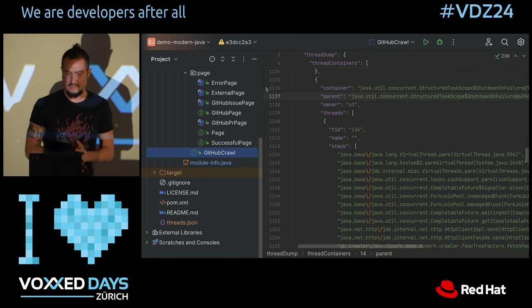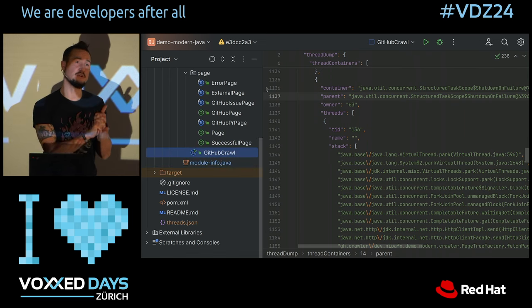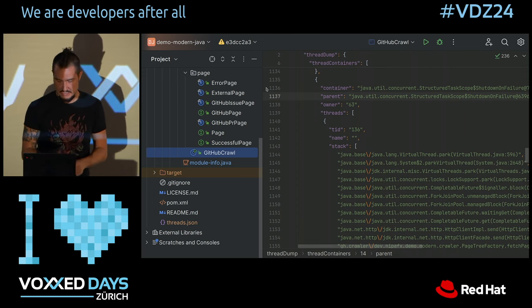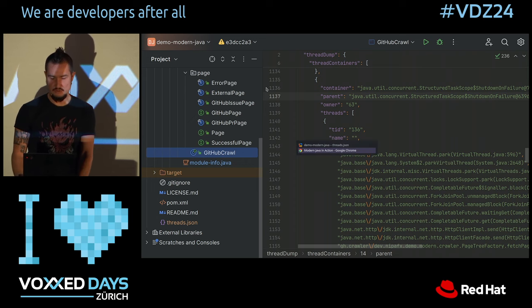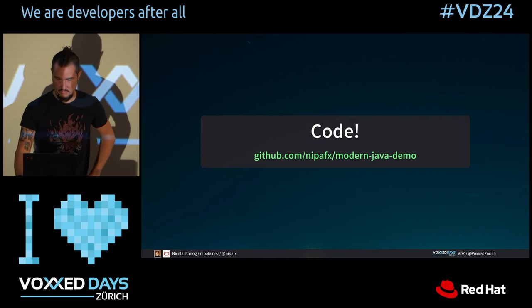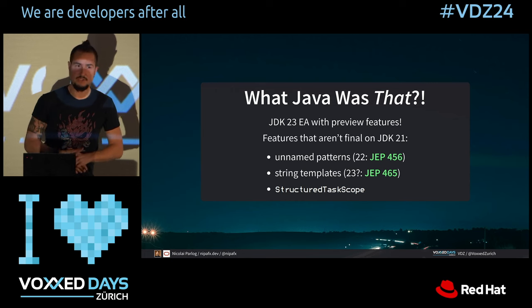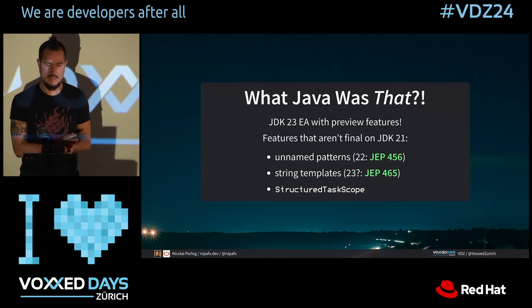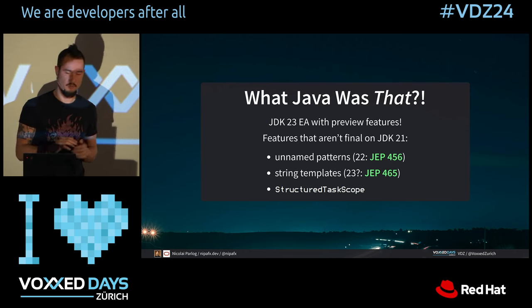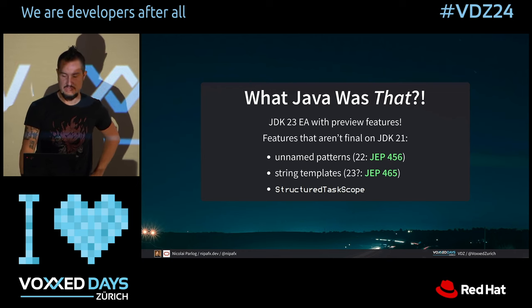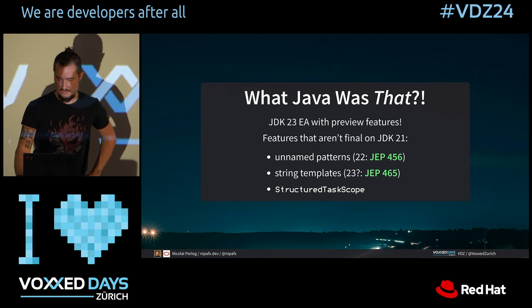I'm fast running out of time. Rather than hastily going through the text block portion, I prefer to show you what's on the slides and cover string templates and the JPackage portion which didn't fit in. I used JDK 23 early access with all the preview features. If you're on JDK 21, you can't use all of this. Unnamed patterns (the underscore) is finalized in JDK 22. String templates will probably be finalized almost unchanged in JDK 23. Structured task scope is also an early access feature with no finalization JEP yet, though I personally do expect that to happen.